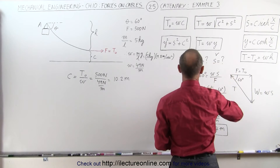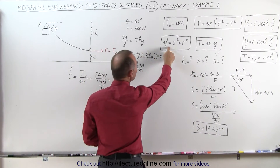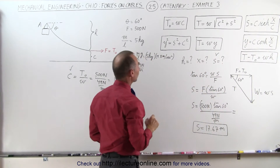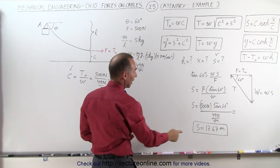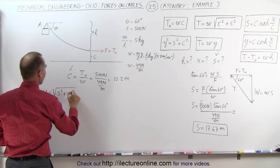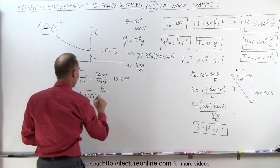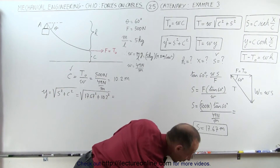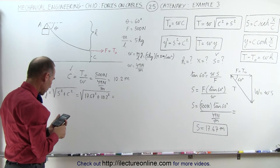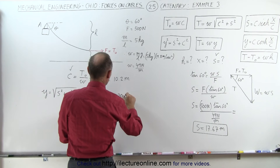Now we have s and c. We still need to find h and x. Using the catenary equation, we can find y, since once we know y we can relate it to x. With s and c known, y equals the square root of s² plus c², which is √(17.67² + 10.2²), and that gives us y = 20.4 meters.